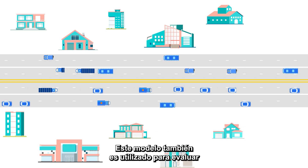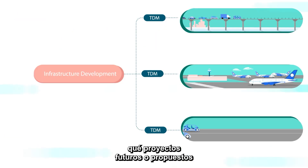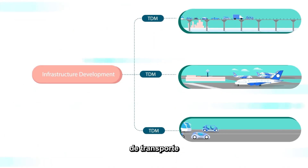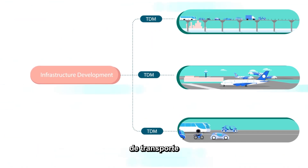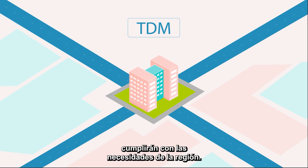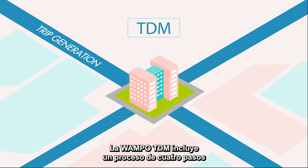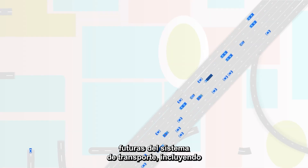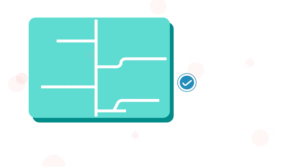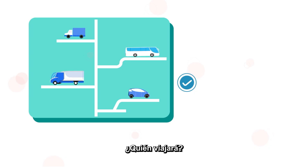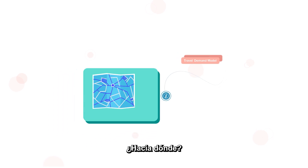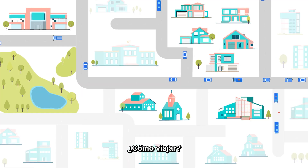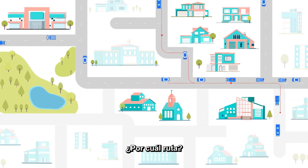The model is also used to evaluate which future or proposed transportation projects will serve the needs of the region. The WAMPO TDM includes a four-step process that helps forecast future transportation system needs, including who's traveling, where to, travel how, and by what route.